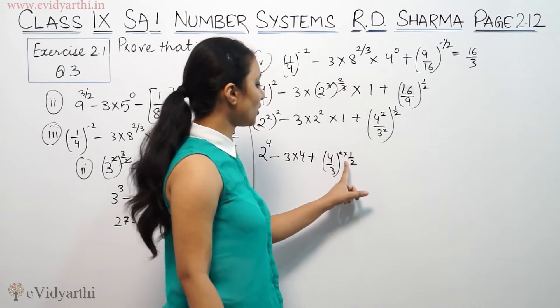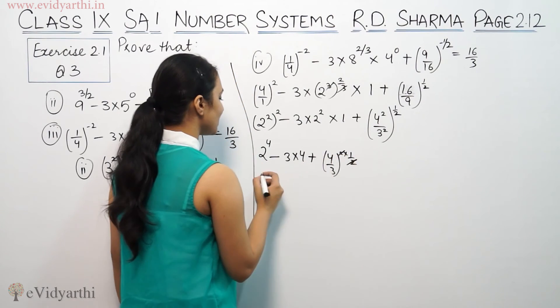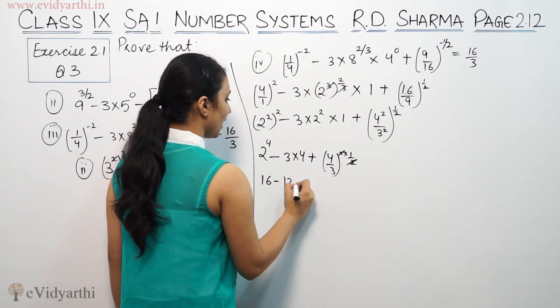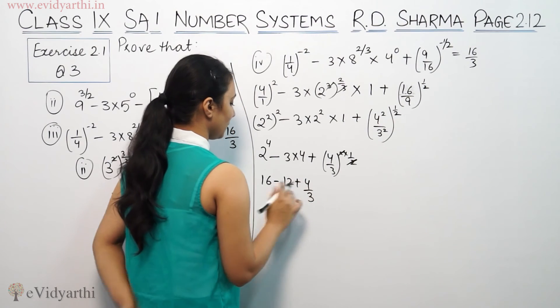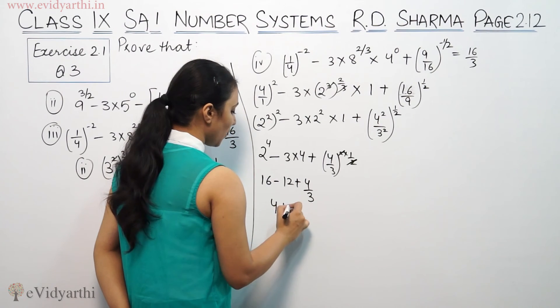This is squares from the common area. We cancel. So we have 16 minus 12 plus 4/3. 16 minus 12 is 4 plus 4/3.